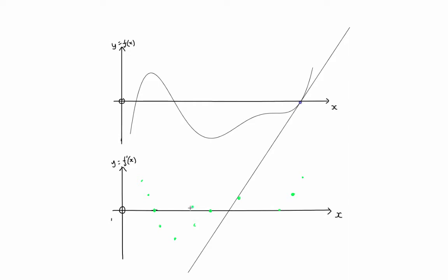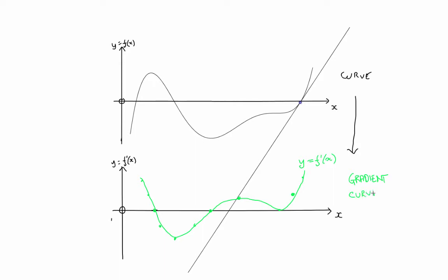So what I can do is say that in between these values, the values we should get for the gradient would fit a curve similar to this. So what I'm looking at down here is a curve y equals f dashed of x which is giving me the gradient values of the original curve at the top. And I've produced the gradient curve, or gradient graph.